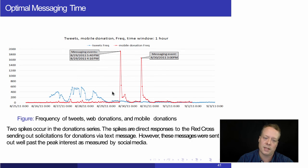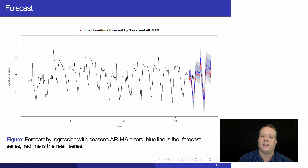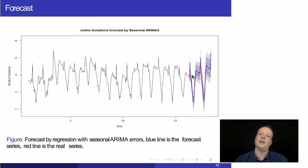Our argument was that if you moved the text messages back in time — sent them earlier in the course of the event — you probably would have received more donations. We showed that you could do a very good job of predicting donations by taking into account the likelihood of Twitter activity in the near future. In our model, we use past Twitter activity to predict future Twitter activity, and then use that future activity plus past donation data to predict future donations.